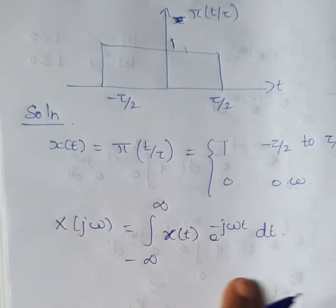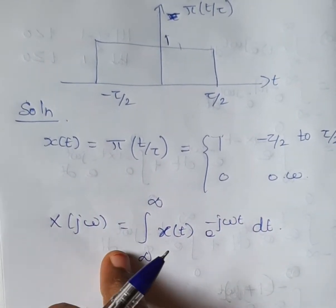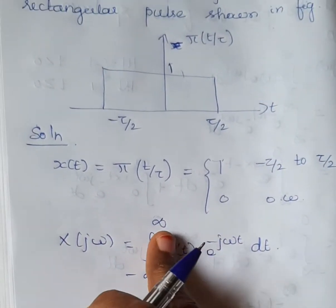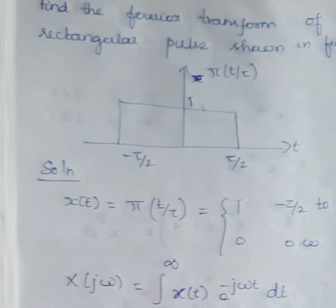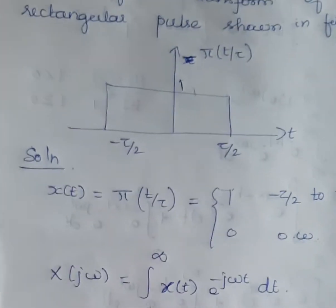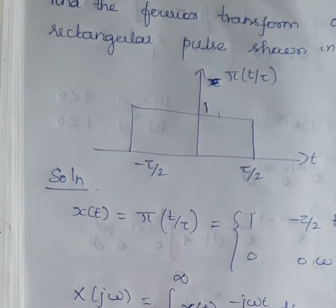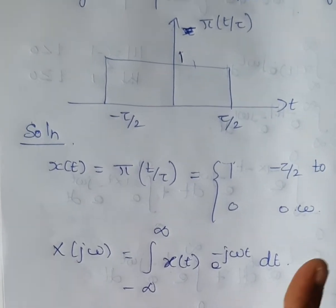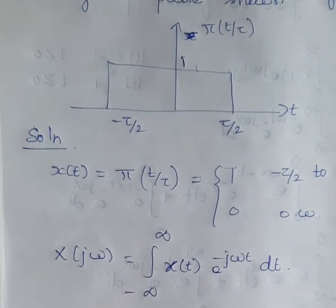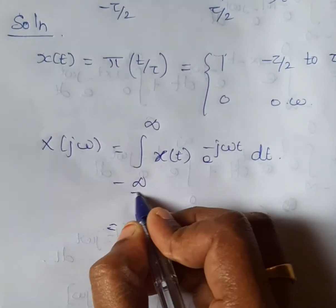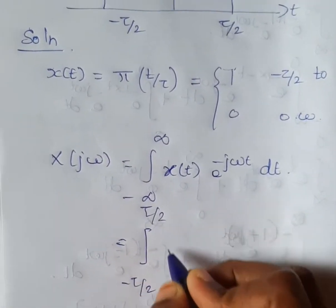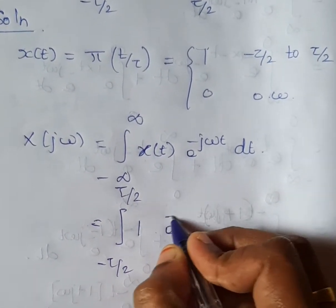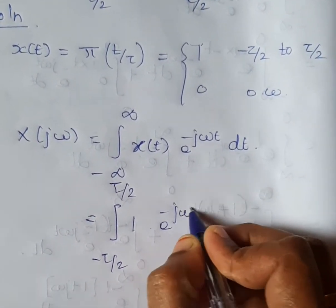The Fourier transform formula is: X(jω) = integral from -∞ to +∞ of x(t) · e^(-jωt) dt. Since x(t) is non-zero only from -τ/2 to +τ/2, the integral becomes: integral from -τ/2 to +τ/2 of 1 · e^(-jωt) dt.